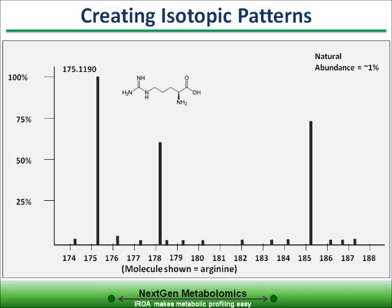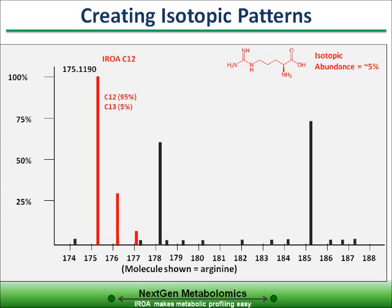The small size of this M+1 peak makes it generally useless for data interpretation. If the percentage of C13 is increased to 5%, note that the M+1 is significantly larger, now 32%. This peak can only be seen under specific circumstances and is quite diagnostic for the presence of this enhanced C13 level.